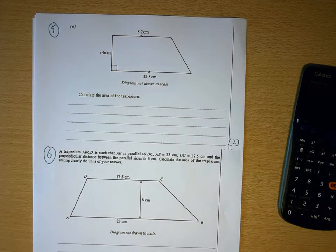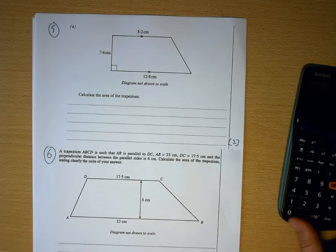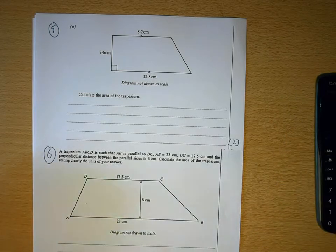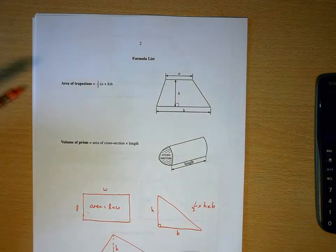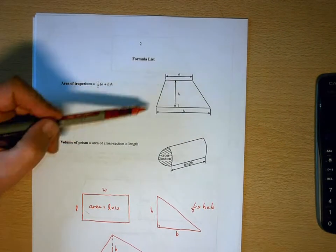Right, the next bunch of shapes that you need to be able to work out the area of are trapeziums. And this is one of the few formulas that you are given on the front of the exam paper. It looks like this.